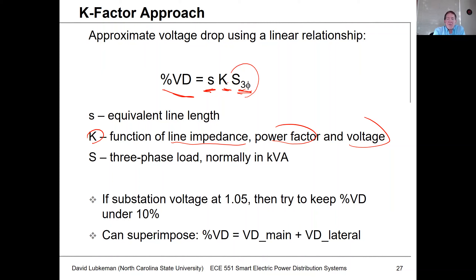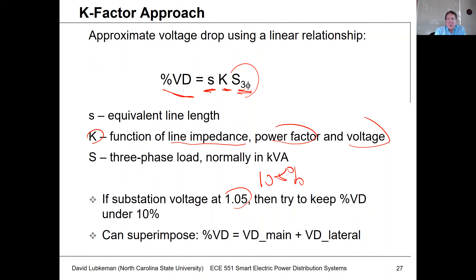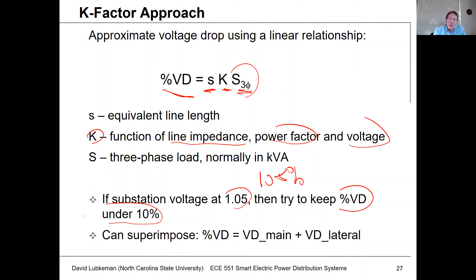If the substation voltage is at 1.05 per unit or 105%, we want to build a system where the voltage drop stays under 10% going from the top of the feeder all the way down to the customer. What's useful about the K-factor is that since this is a linear calculation, we can superimpose results. For example, to calculate the percent voltage drop to a customer, we can superimpose the drop on the main feeder with the drop on a lateral and simply sum those together to get the net voltage drop.